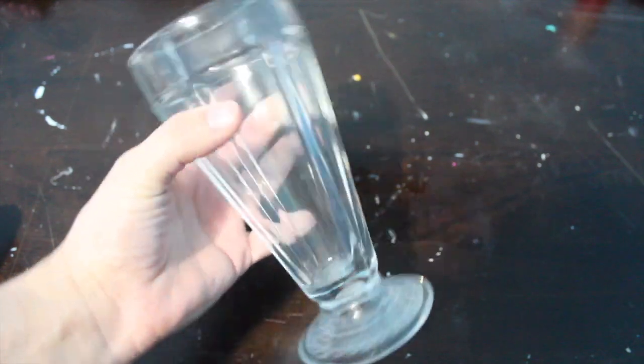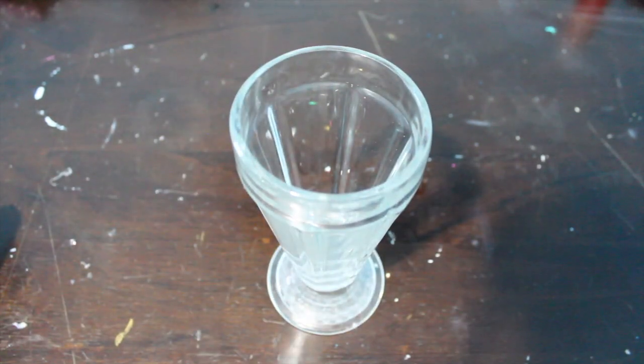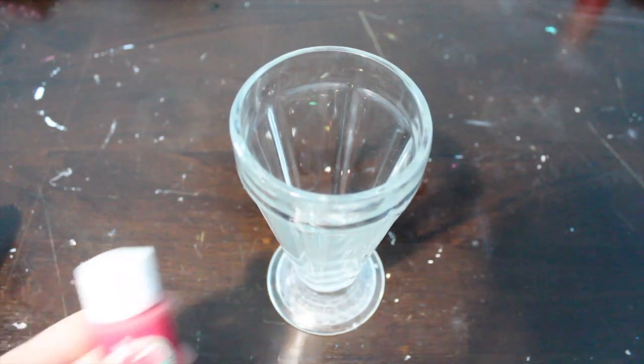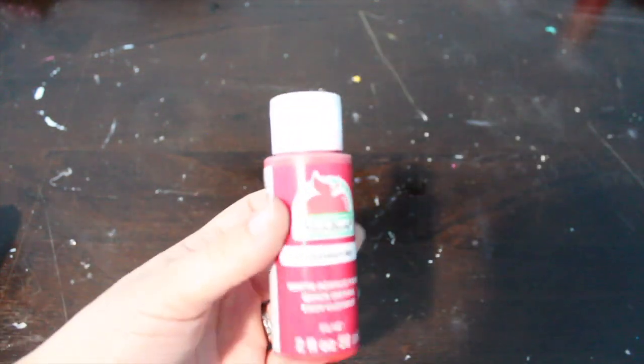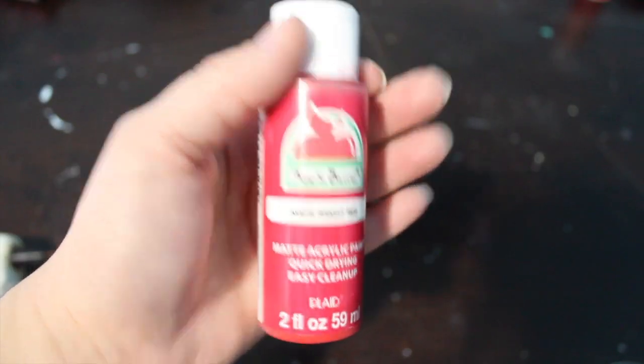To start off, you're gonna need some sort of glass. I already had these little root beer float glasses on hand, but they do have tons of cute options at Dollar Tree if you don't have something already. Then we're going to be using a little bit of this red acrylic paint. I'm just using the shade bright red, this is just from Walmart.